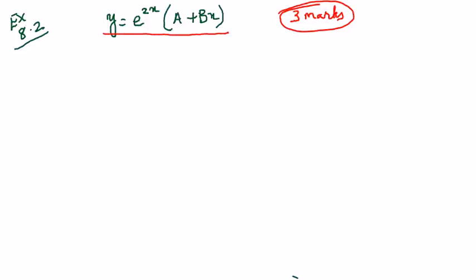There are two constants A and B here. Whenever we have to form the differential equation, we have to remove these two constants. How can I remove A and B? When I differentiate once, A will disappear because differentiation of a constant is 0. Likewise when I differentiate the second time, constant B will also disappear. So that is how we have to do this sum. Let us get started.